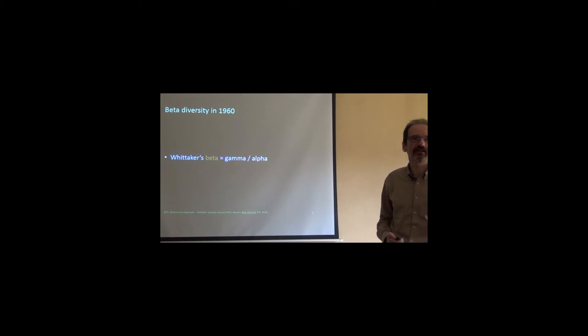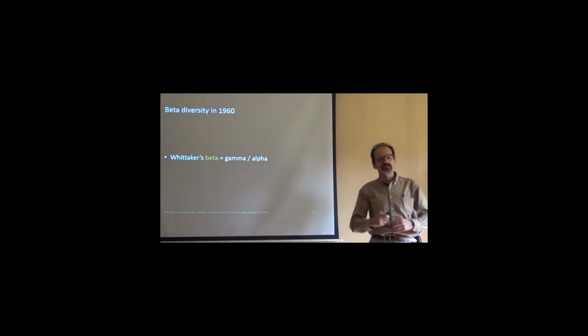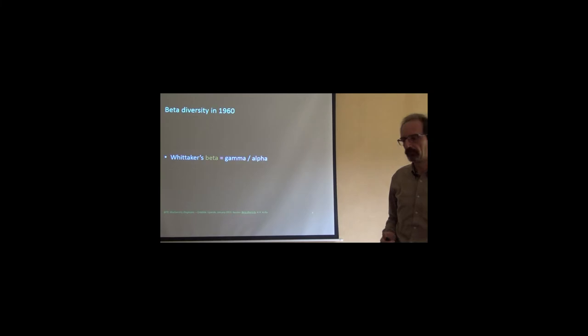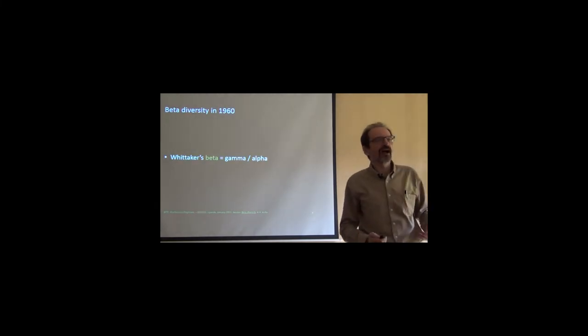You have a diversity which he called gamma diversity, which would be the diversity at a large scale, at the landscape scale. And that could be, in turn, made up of two different components. One would be called the alpha diversity, or the diversity at a small scale, at a local scale. And then the beta diversity, which was something that multiplied by alpha should give gamma diversity.